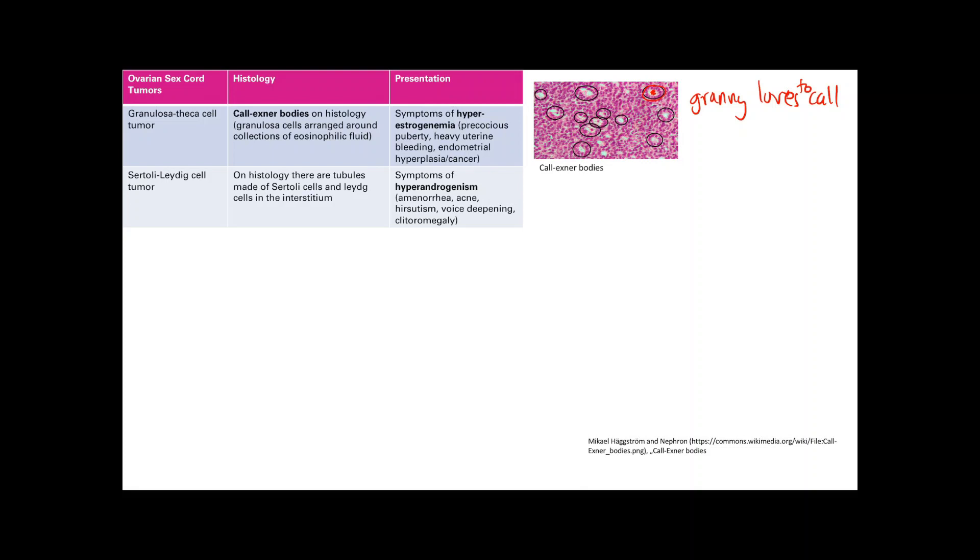Finally, fibroma. It's a benign tumor with bundles of fibroblasts on histology, and it presents with Meig syndrome. This is basically a triad of a fibroma on the ovaries, ascites, and pleural effusion. They don't really know why it happens, but it's basically fibroma plus effusion is Meig syndrome.